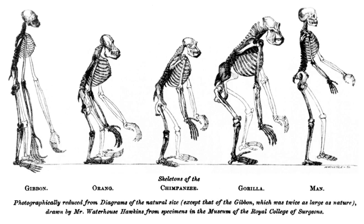Evolutionary biology is the study of the origin and descent of species, as well as their change over time. Informatics has assisted evolutionary biologists by enabling researchers to trace the evolution of a large number of organisms by measuring changes in their DNA, rather than through physical taxonomy or physiological observations alone. More recently, researchers can compare entire genomes, which permits the study of more complex evolutionary events, such as gene duplication, horizontal gene transfer, and the prediction of factors important in bacterial speciation.